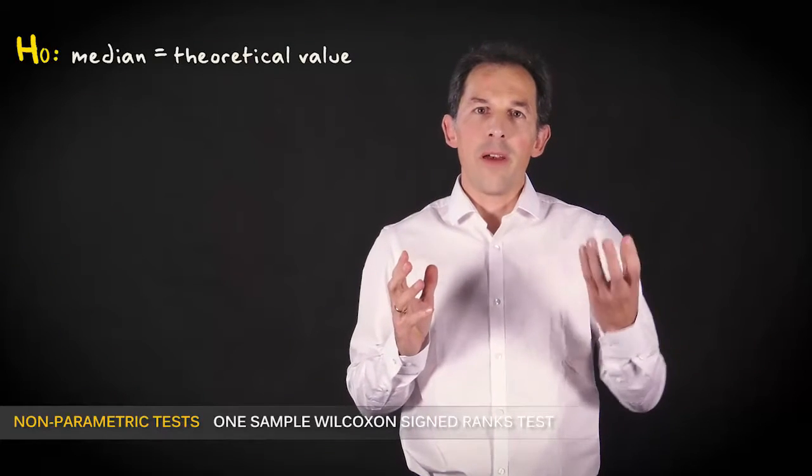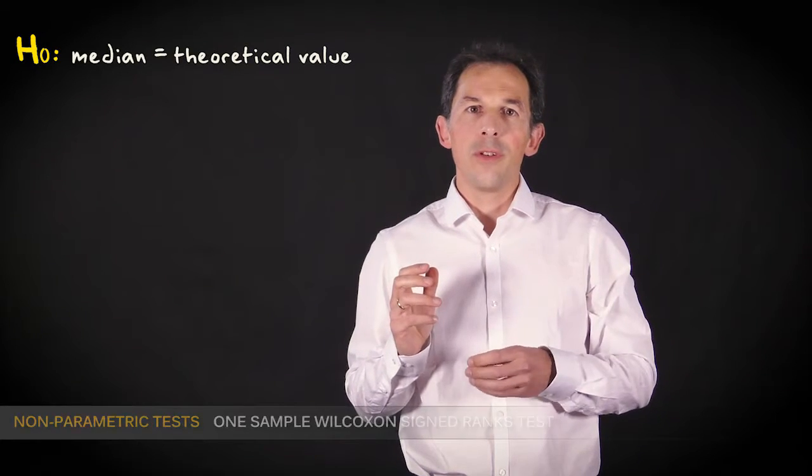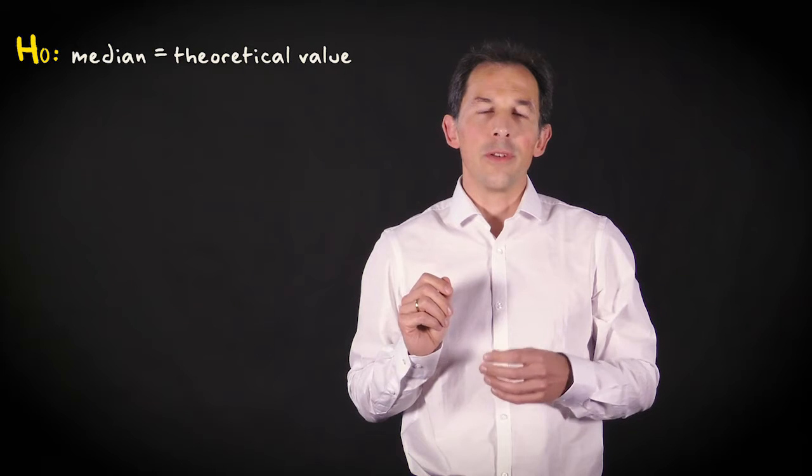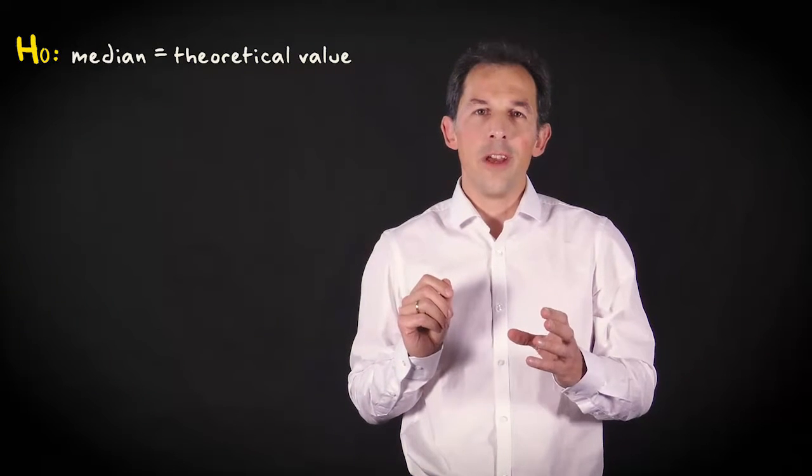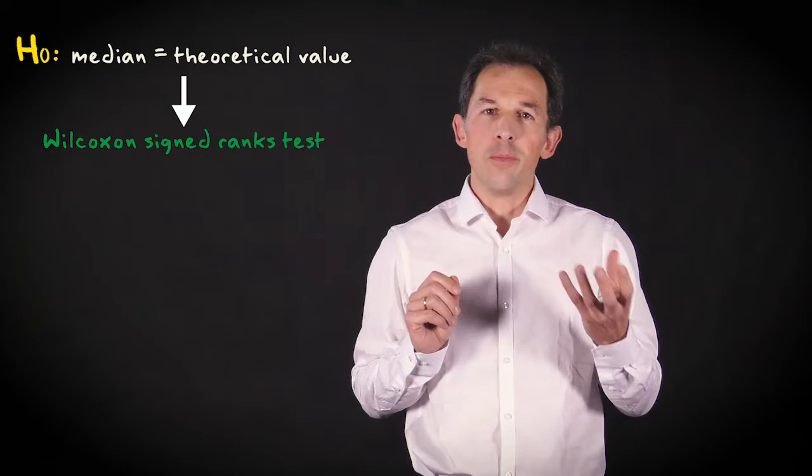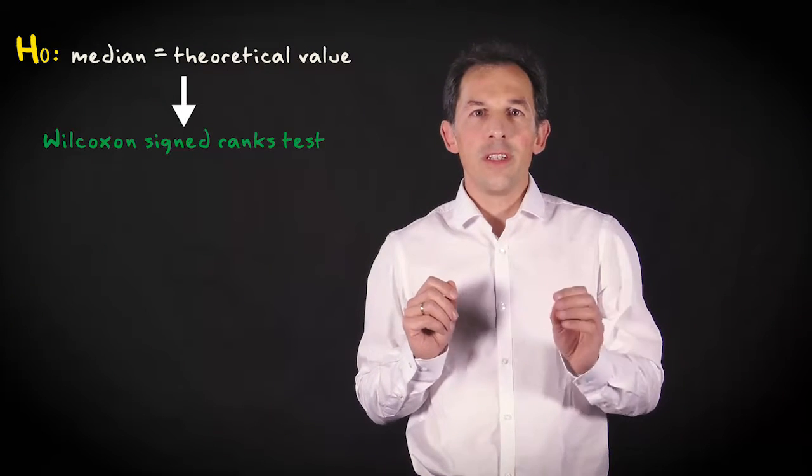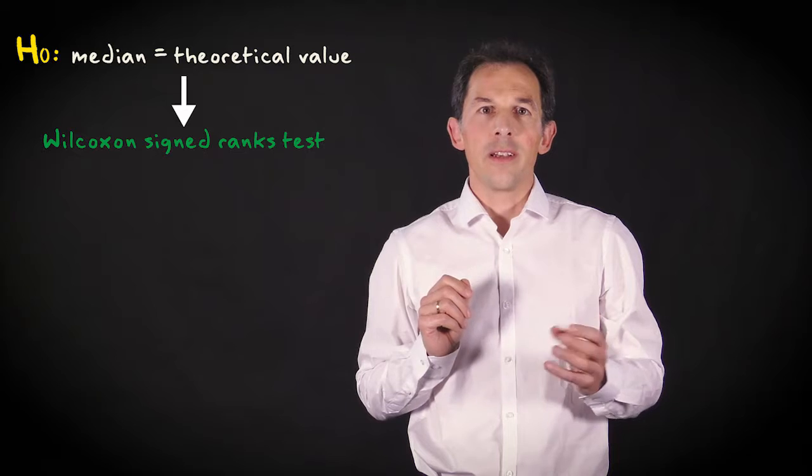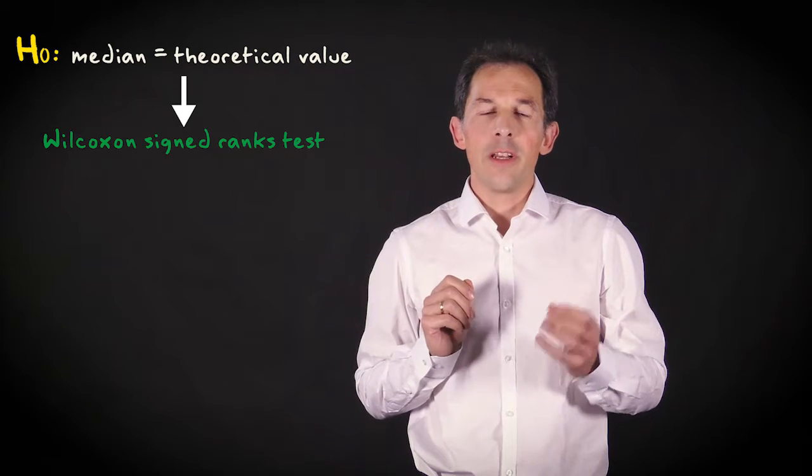If you'd like to compare a sample average to a theoretical value, but you can't use a parametric test because its assumptions are violated, you can often use the Wilcoxon signed rank test. It's more powerful than the sign test, but still makes very few assumptions about the data. In this video I'll explain how it works.